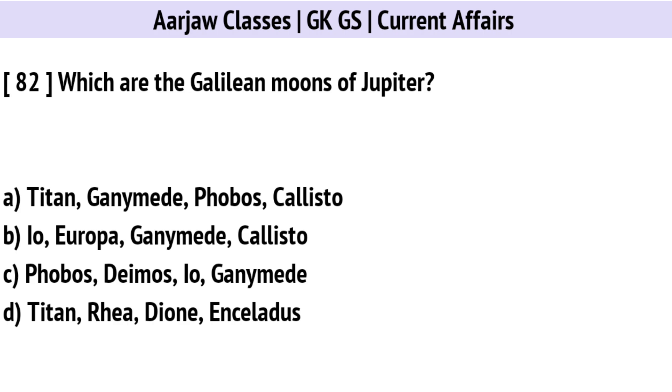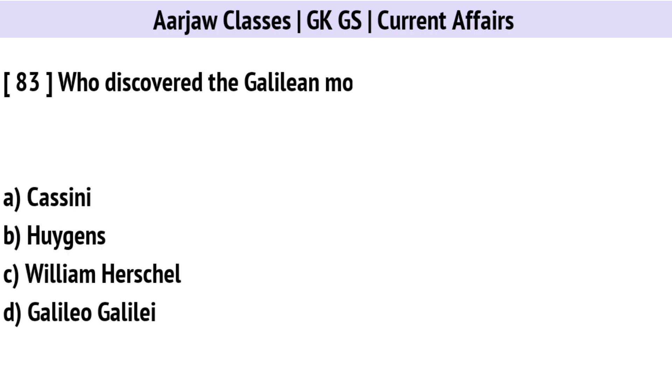Which are the Galilean moons of Jupiter? Correct option is B: Io, Europa, Ganymede, and Callisto.